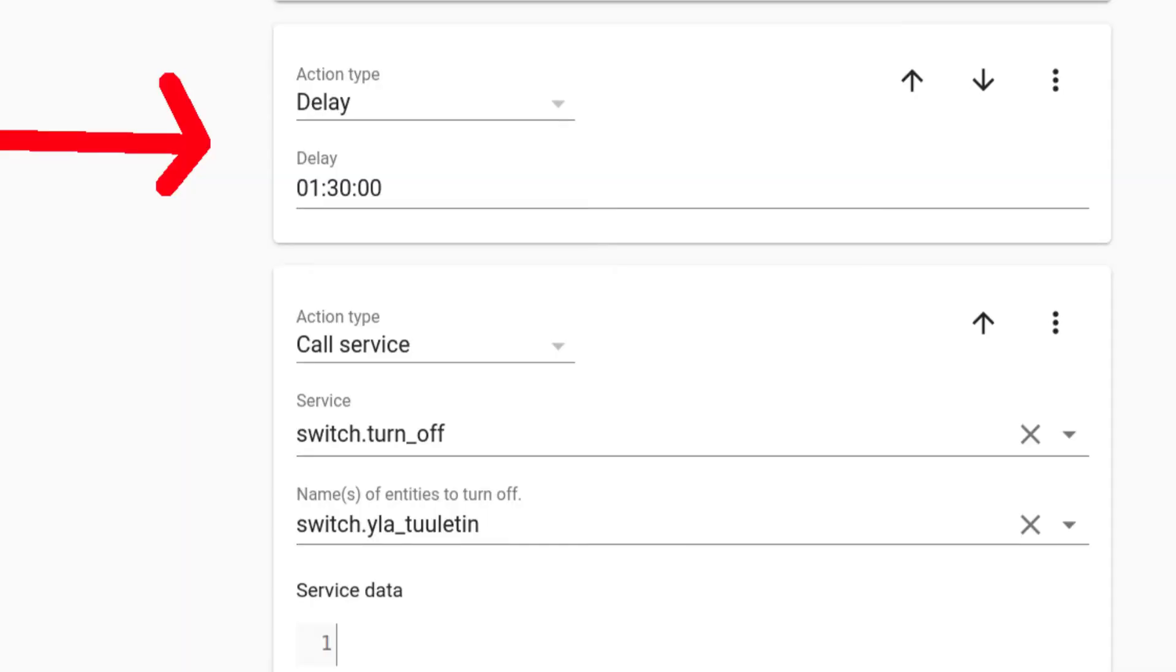So, I resolved that by just using a delay like a timer to switch my ventilation off. Easy and it works great. Just see how long it actually takes to dry the whole room and use that time period to switch the automation off.